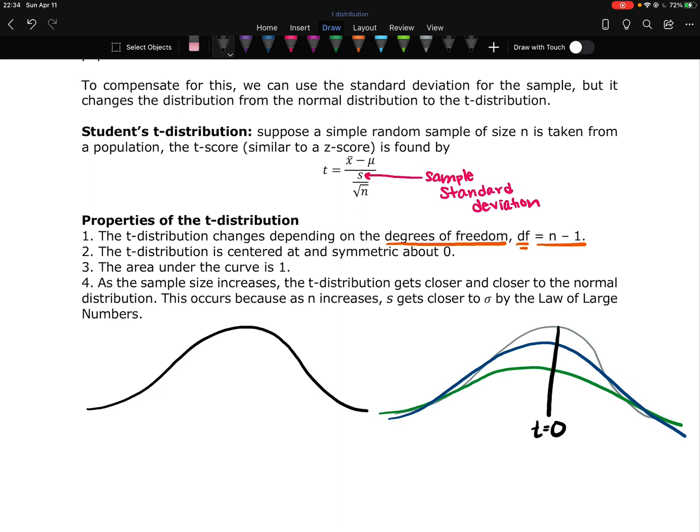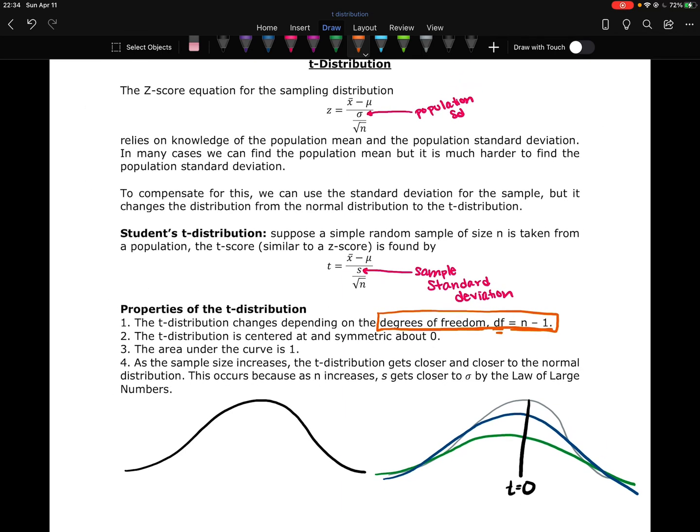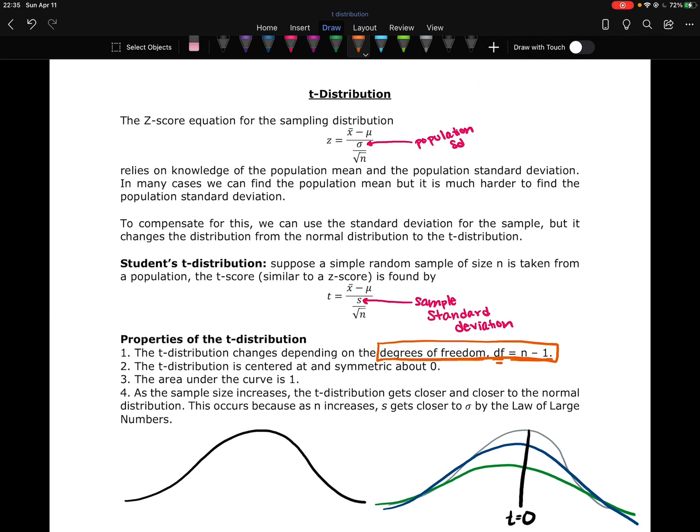So this is the t-distribution. It is very similar. We just have one more thing we have to think about, which is this degrees of freedom here. I'm going to box it now. Degrees of freedom. And it's calculated by taking our sample size minus one. But again, we're going to let technology do all of this work for us as far as finding those probabilities and all of that stuff. So that is this new t-distribution, still bell-shaped, still all that fun probability stuff.